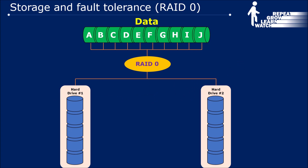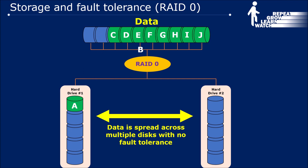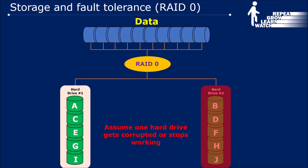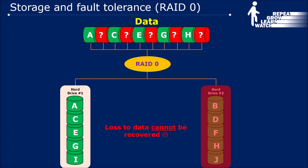Let's look at RAID 0. We have our data at the top and two hard drives. In RAID 0, half of the data is stored on one drive and the other half is stored on the other drive. However, if one of the two hard drives starts malfunctioning or gets corrupted, the loss of data cannot be recovered — the data is lost and gone forever.